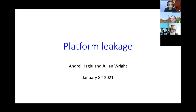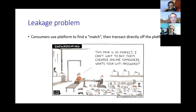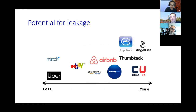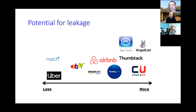This is a problem common to most platforms, though it varies in severity. Platforms where each participant wants to find one counterpart and interact repeatedly have severe leakage problems. For platforms with one-off interactions, leakage is less serious. Solutions can broadly be divided into two buckets: those related to pricing and choice of business model, and those related to manipulation of information.